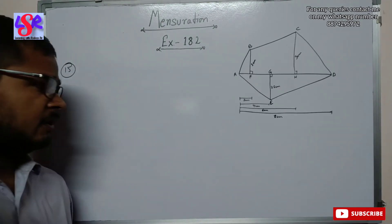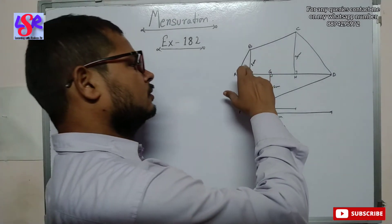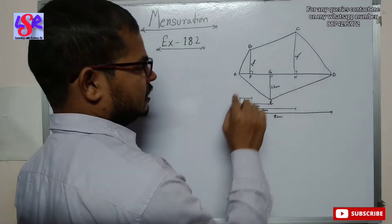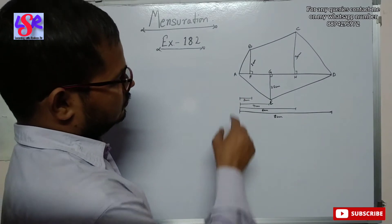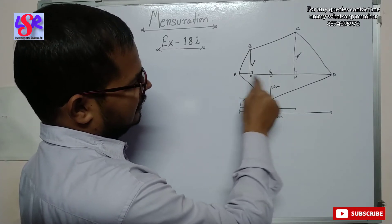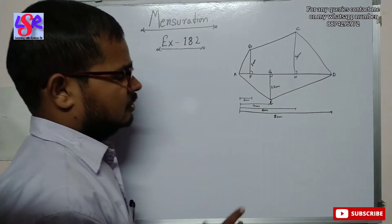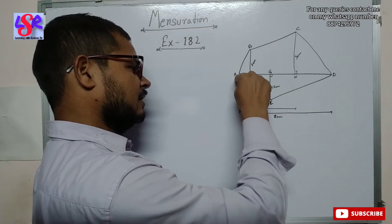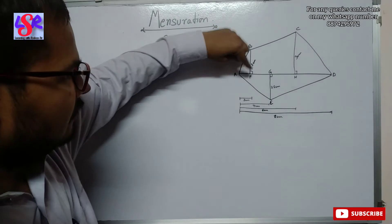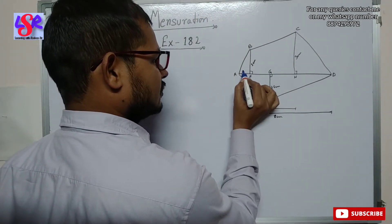Now let us move to question number 15. We have a polygon divided into 3 triangles and 1 trapezium. The given lengths are: AF is 3 centimeters, HE is 4 centimeters, AH is 6 centimeters, and AD is 8 centimeters. AD will help us find the area of triangle AED. We can also use AF of 3 centimeters to find triangle AFD area.